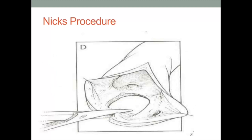The Nicks procedure is classified as a posterior enlargement technique and involves an incision down the commissure dividing the left and non-coronary leaflets. Limiting the incision to just the interleaflet triangle can enlarge the root efficiently upwards of 2-3 mm. If a greater enlargement is required, an incision can be carried down further into the anterior leaflet of the mitral valve and the roof of the left atrium.